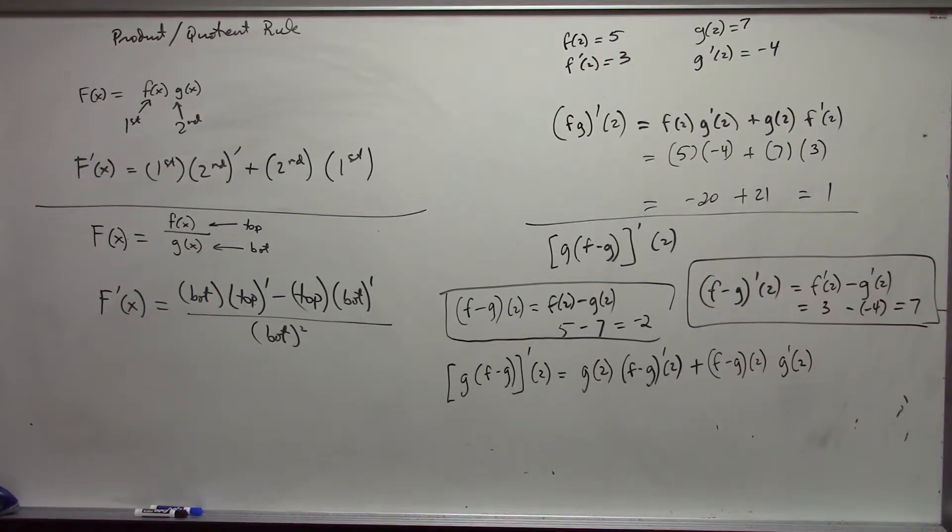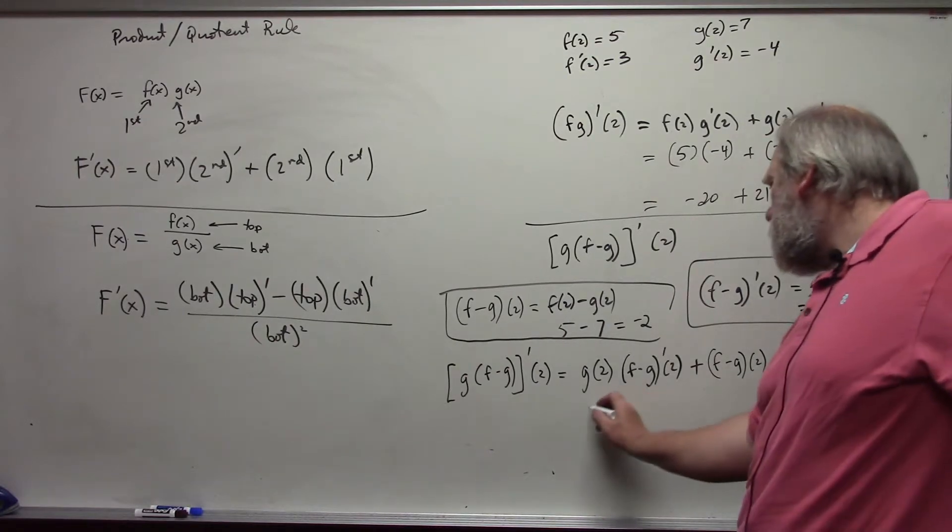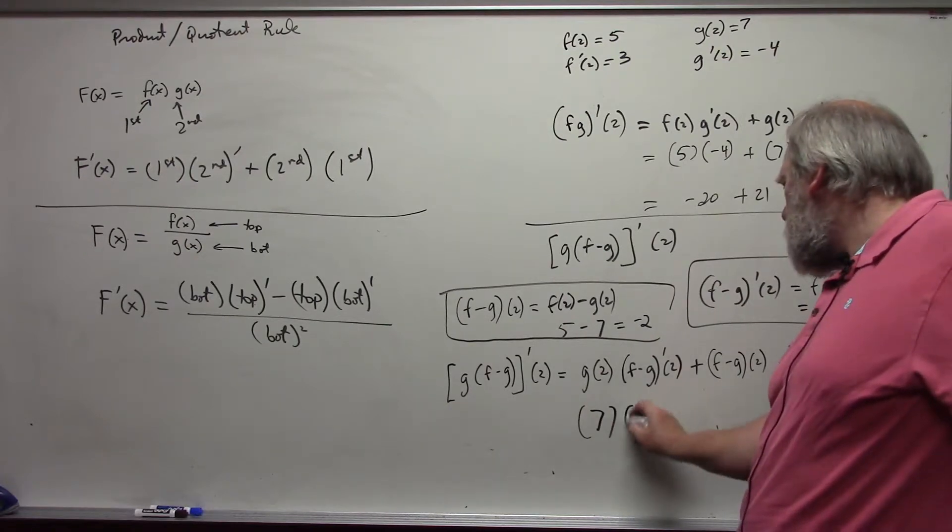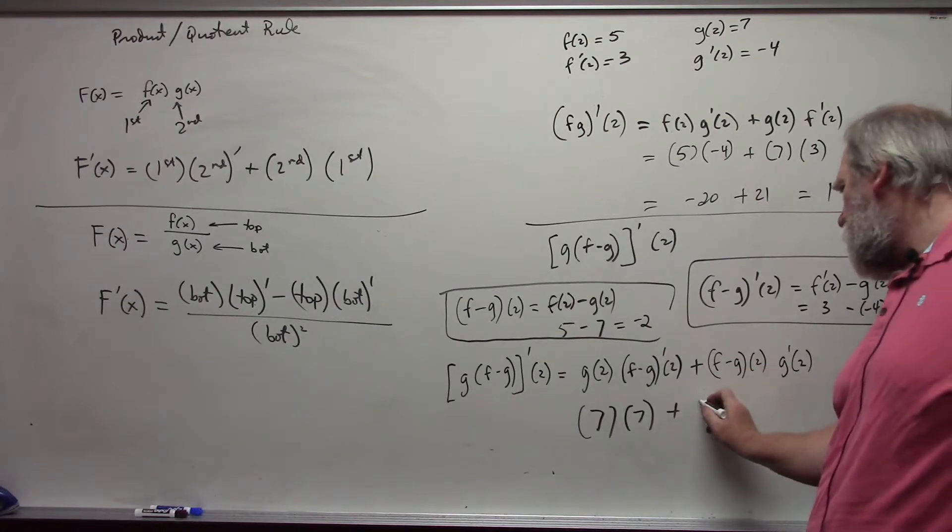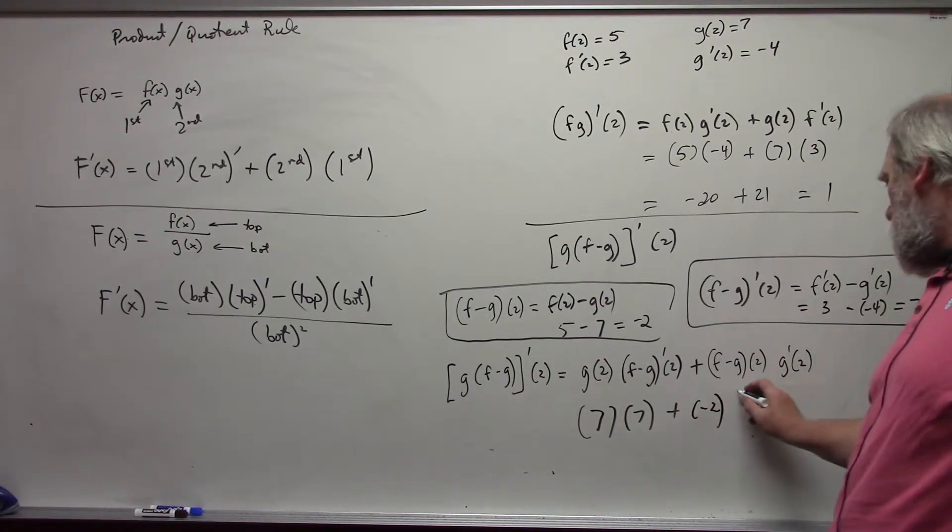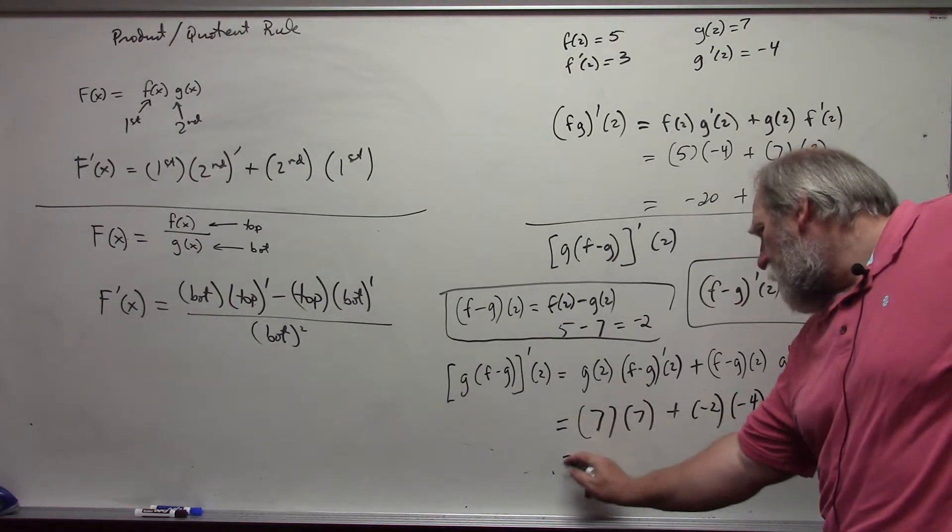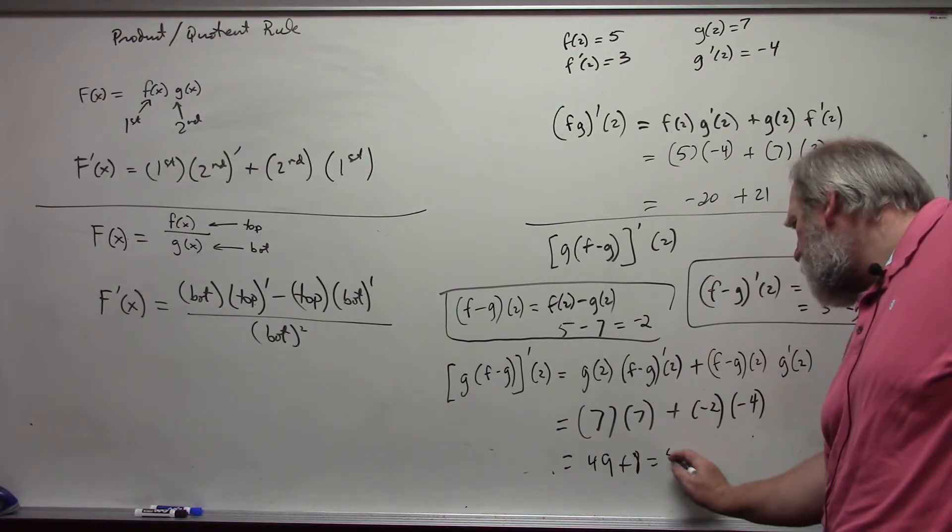Forgot to do the other half. And now we can put in numbers. g of 2 was 7, f minus g prime at 2 we said was 7, plus f minus g at 2 is negative 2, and g prime at 2 is negative 4, and so I get 49 plus 8 is 57.